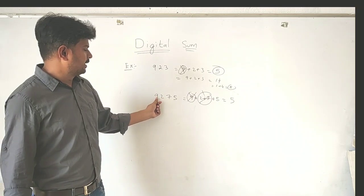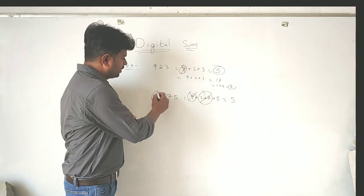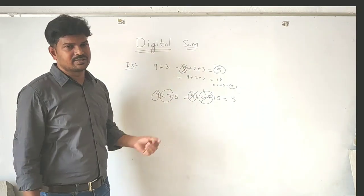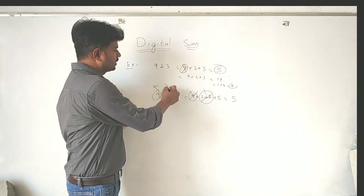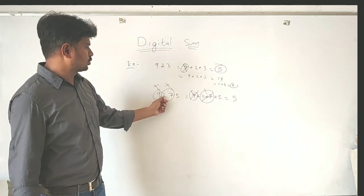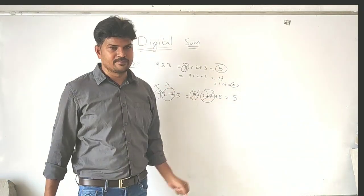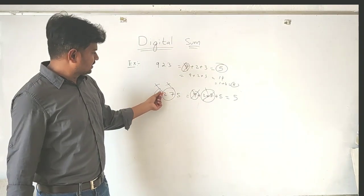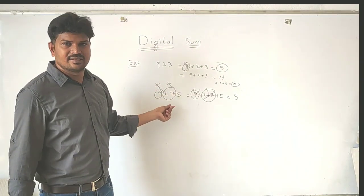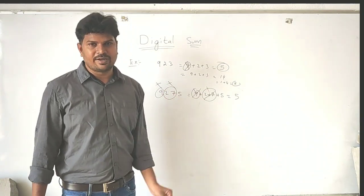Take another example: 9, 2, 7, 5. Here we have 9, and the sum of 2 plus 7 is also 9, so both can be ignored. That makes for speedy calculation. So 9 plus 2 plus 7 can all be ignored — only 5 remains. If you consider all digits including 9, 2, and 7, the answer is still 5.